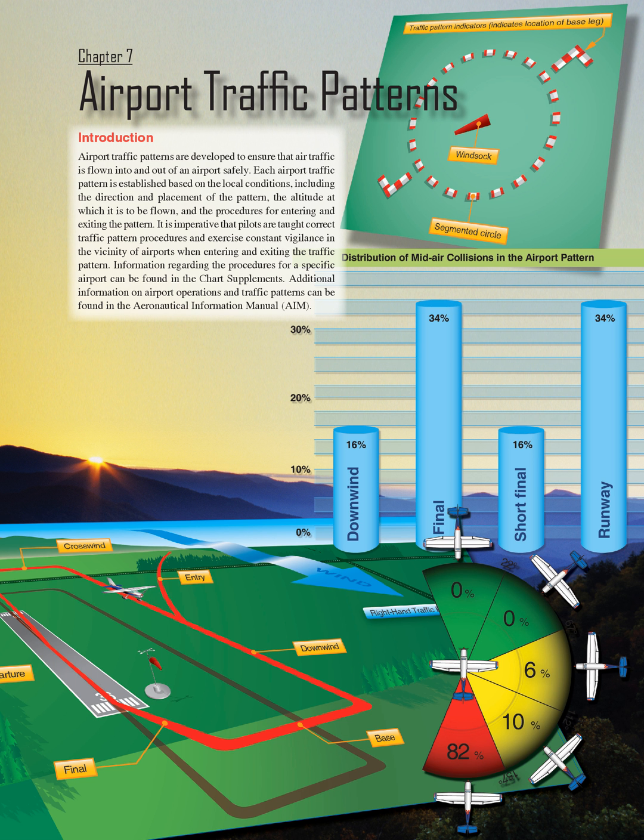Information regarding the procedures for a specific airport can be found in the chart supplements. Additional information on airport operations and traffic patterns can be found in the Aeronautical Information Manual, AIM.